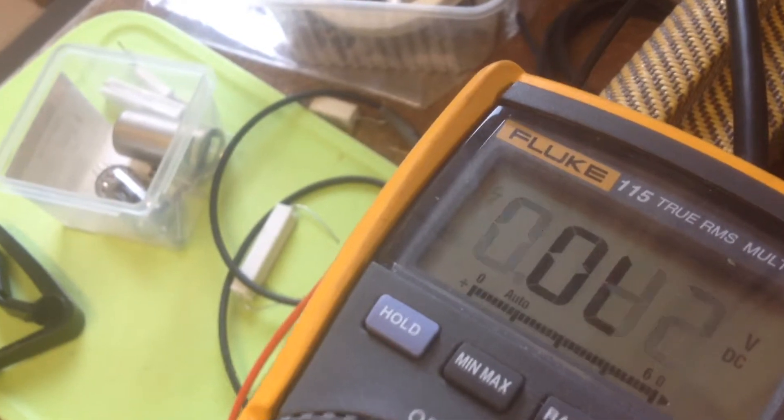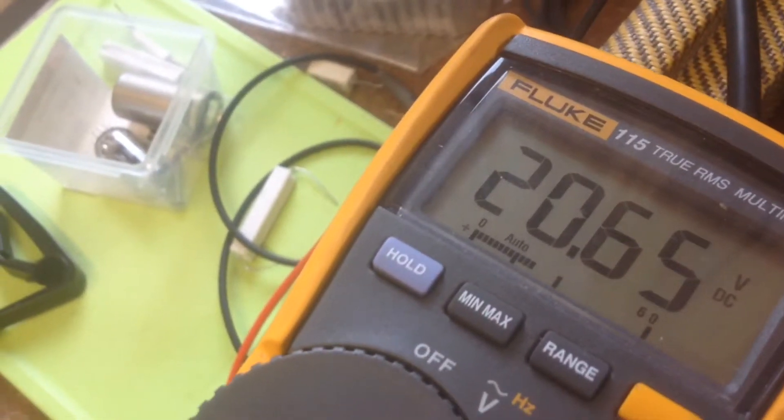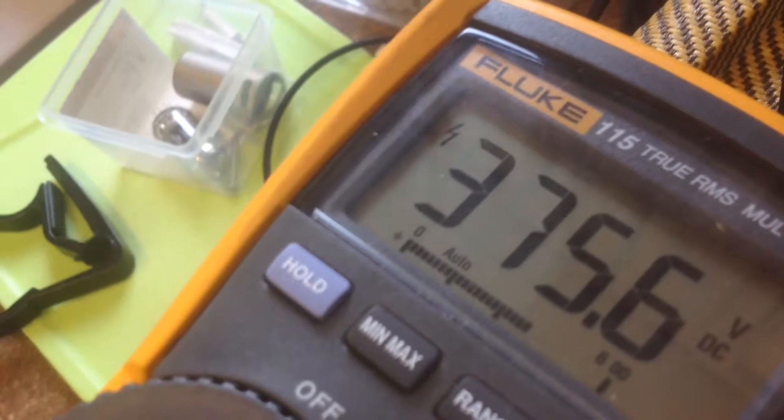Bias voltage on the cathode, 20.6. Plate voltage 375.